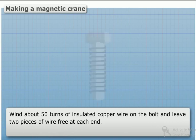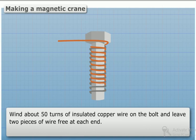Method: Wind about 50 turns of insulated copper wire on the bolt and leave two pieces of wire free at each end.